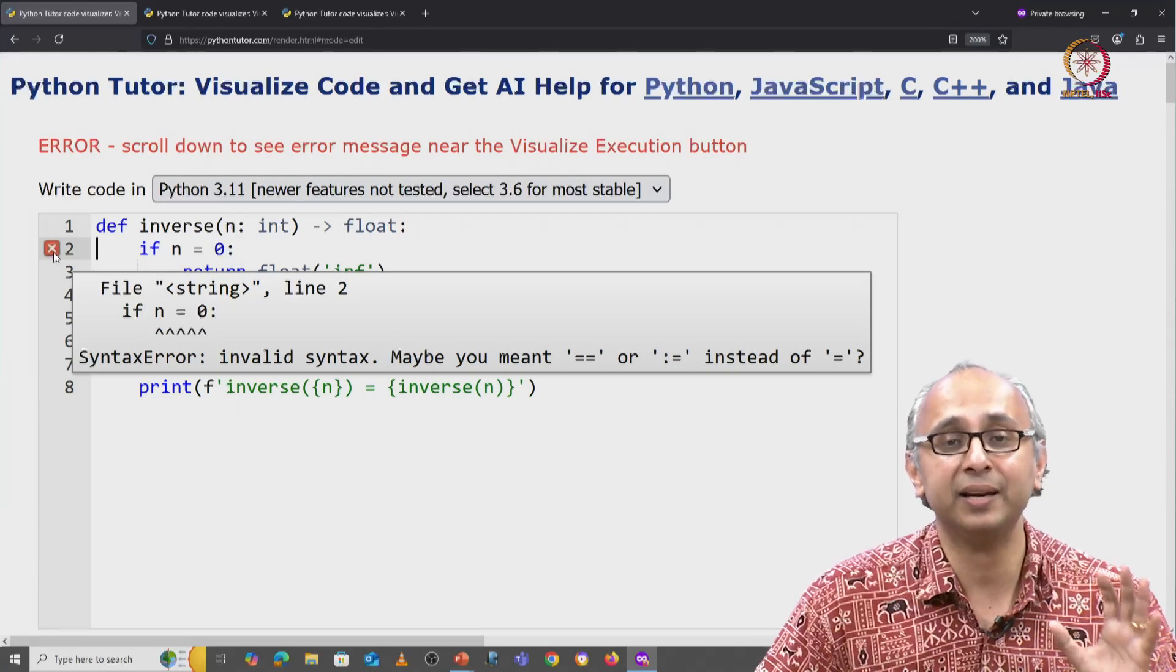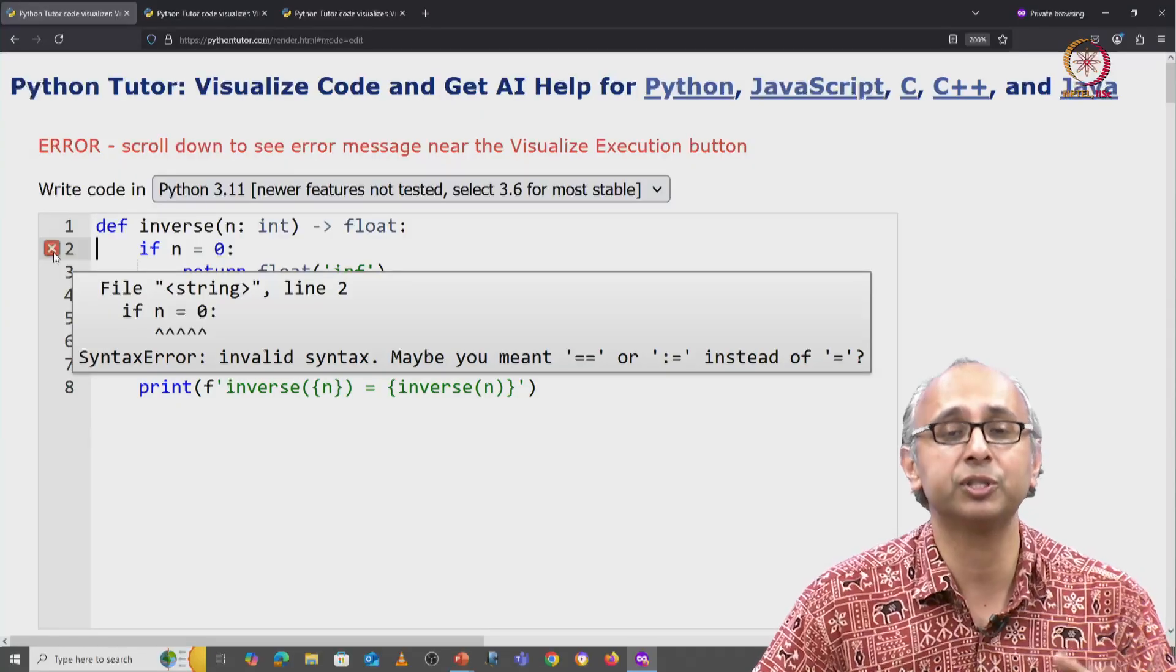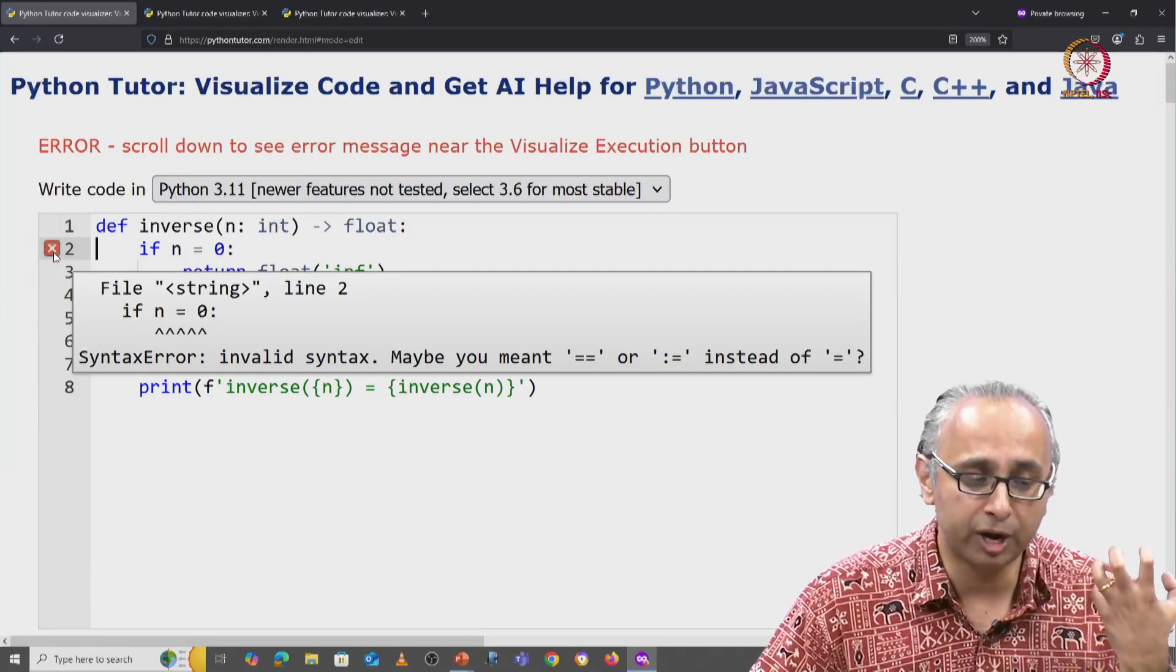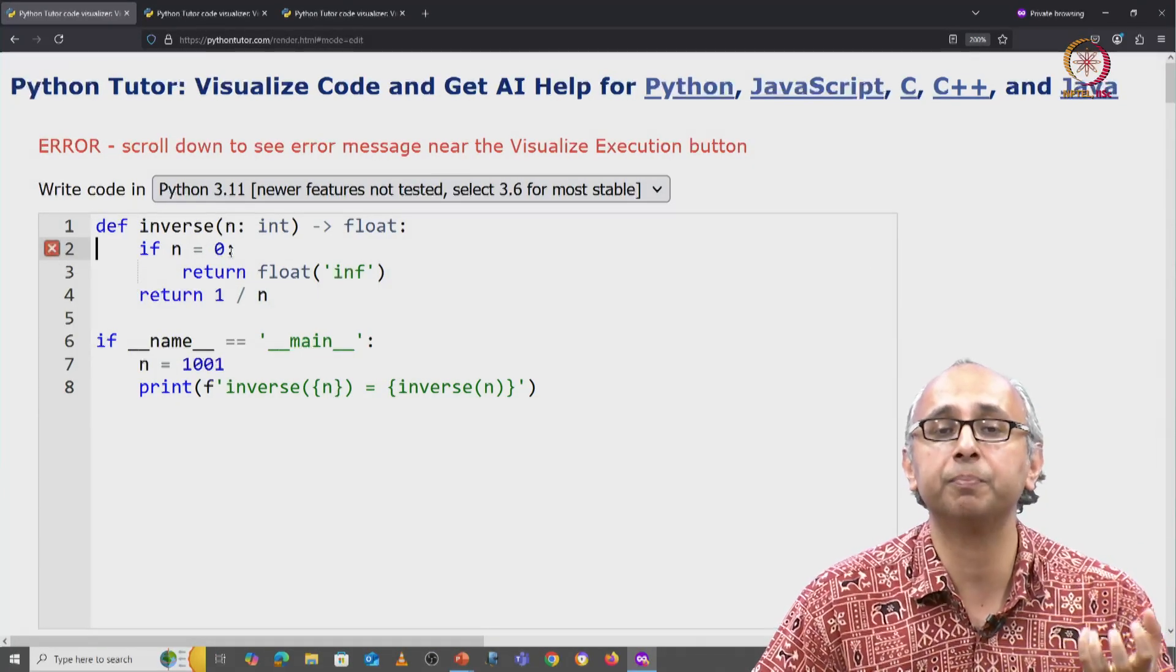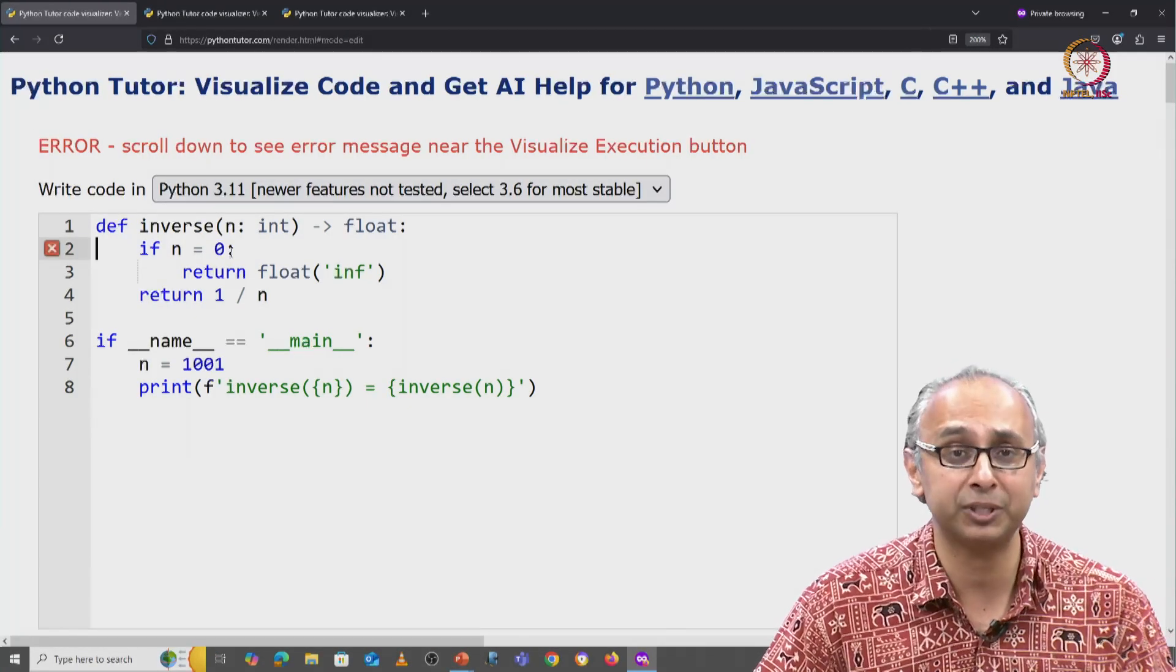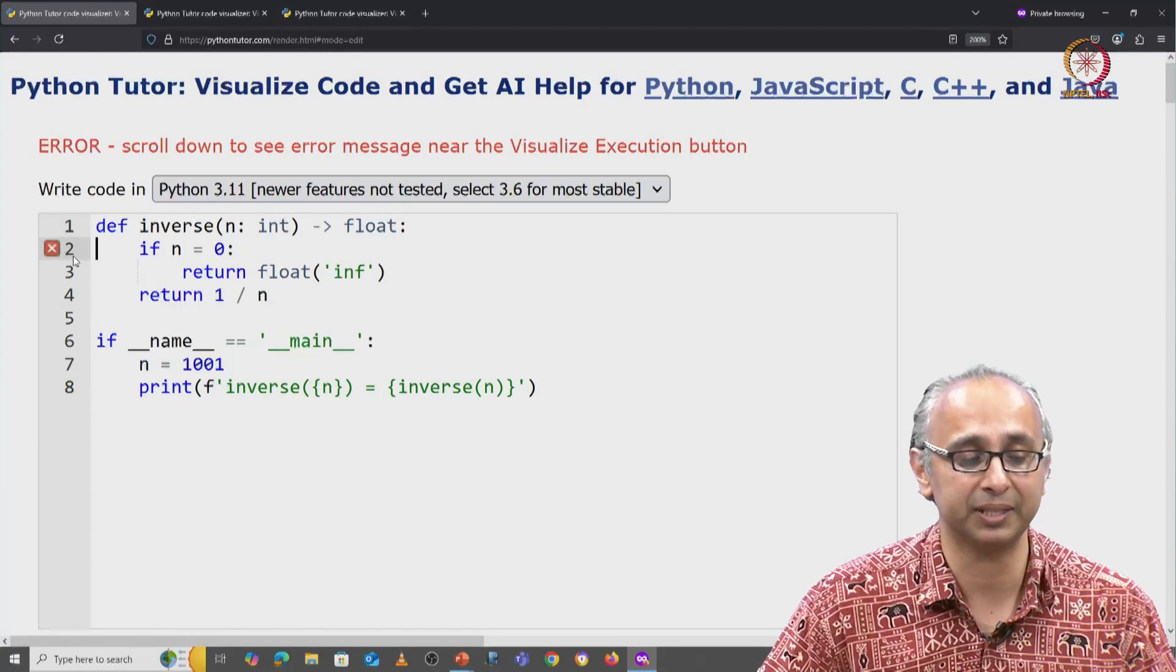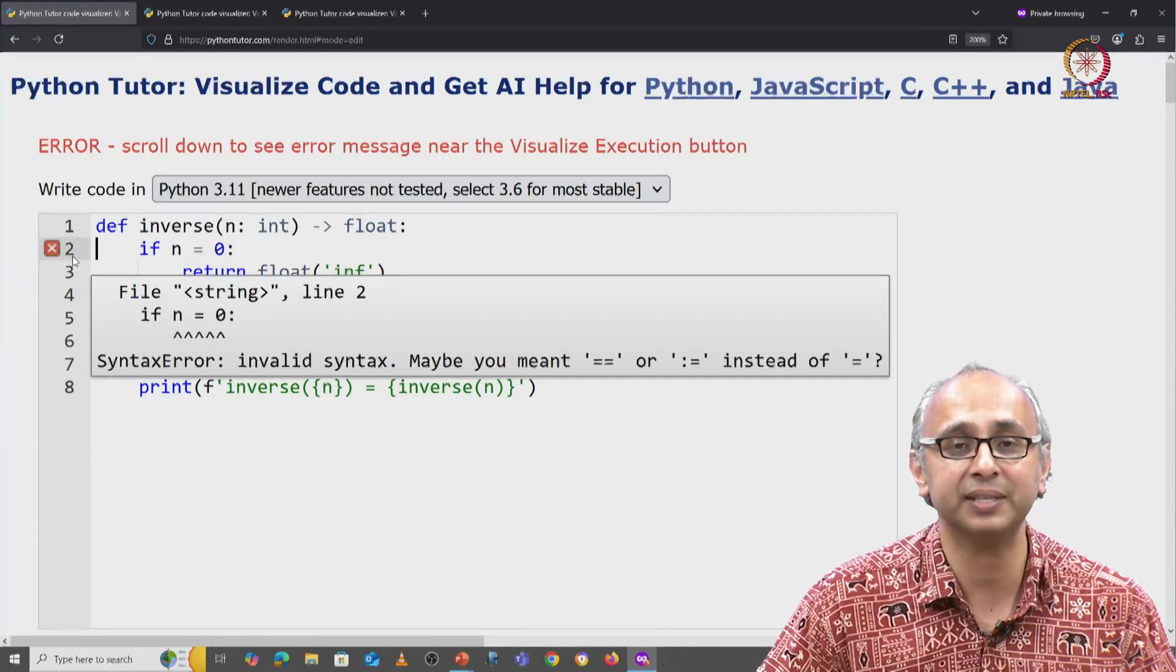This is not a compiler error. Remember, Python is not a compiled language. The interpreter is trying to convert our given Python code into assembly code by interpreting it line by line and it was unable to interpret this statement. This is illegal Python syntax.